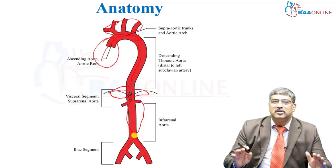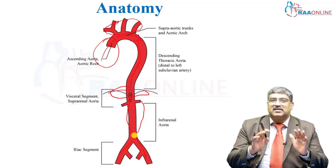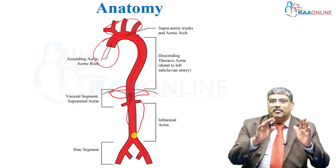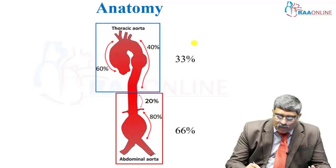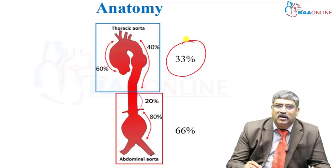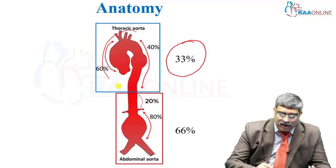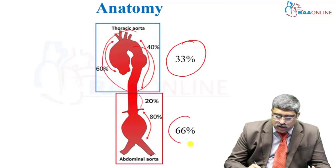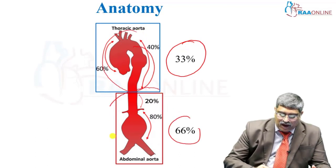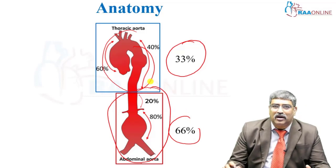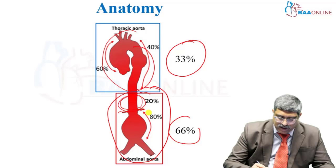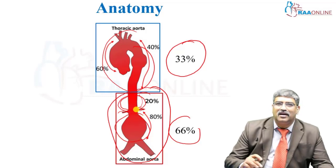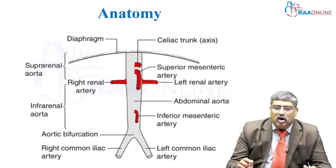This is one of the largest vascular structures in the body, supplying major organs of the thoracic and abdominal cavity. About one third of aneurysms arise from the thoracic aorta and two thirds from the abdominal aorta. Of the abdominal aortic aneurysms, 20 percent are suprarenal and 80 percent are infrarenal.